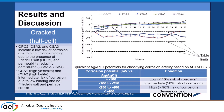For the cracked samples' half-cell potential, a similar trend was observed. OPC2, CSA3, and CSA4 showed a low risk. CSA1 showed low to intermediate risk and then started to descend towards the end of the testing age. CSA2 in this case also showed an intermediate risk to corrosion.